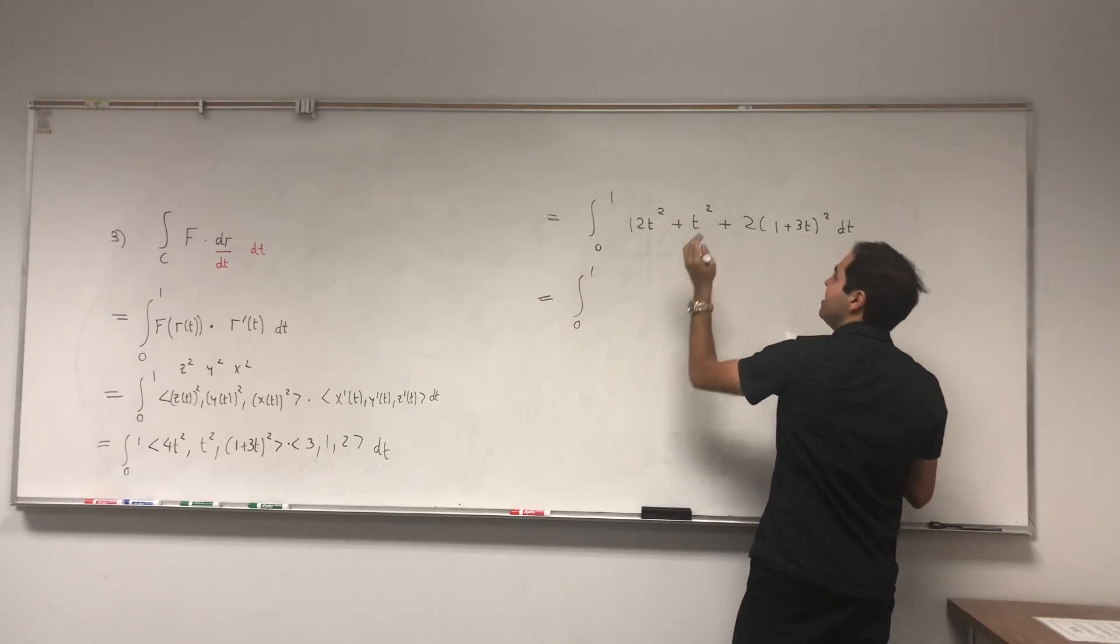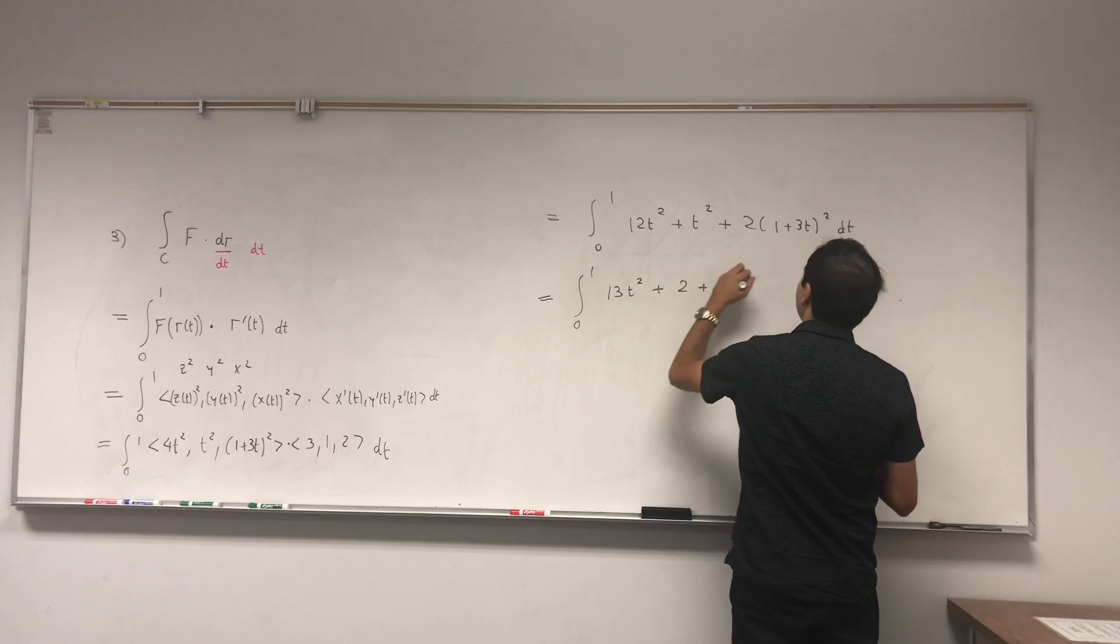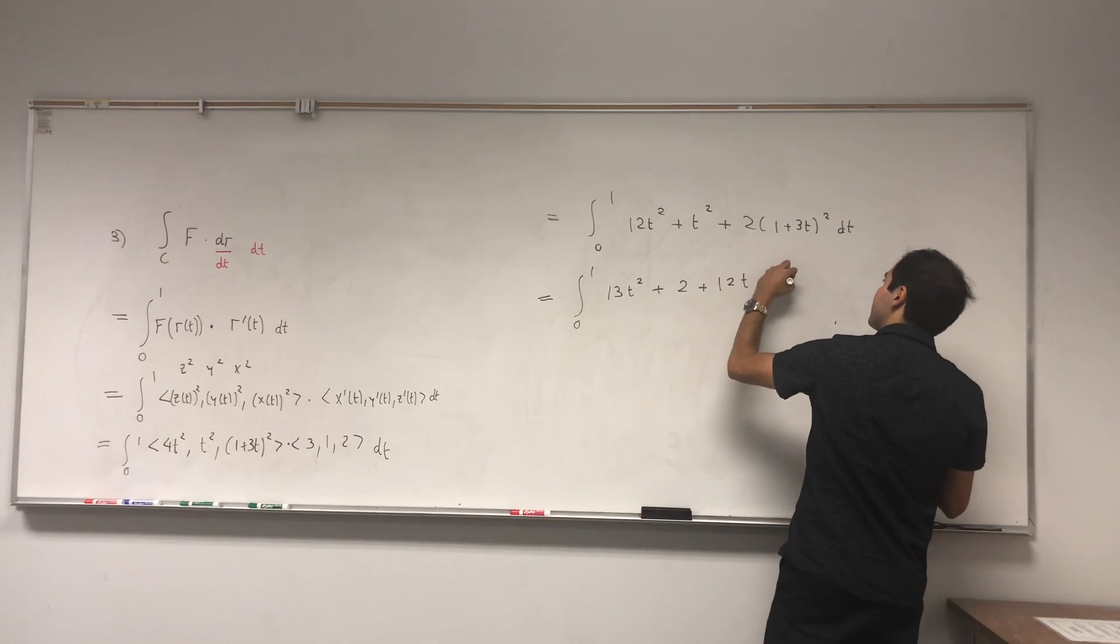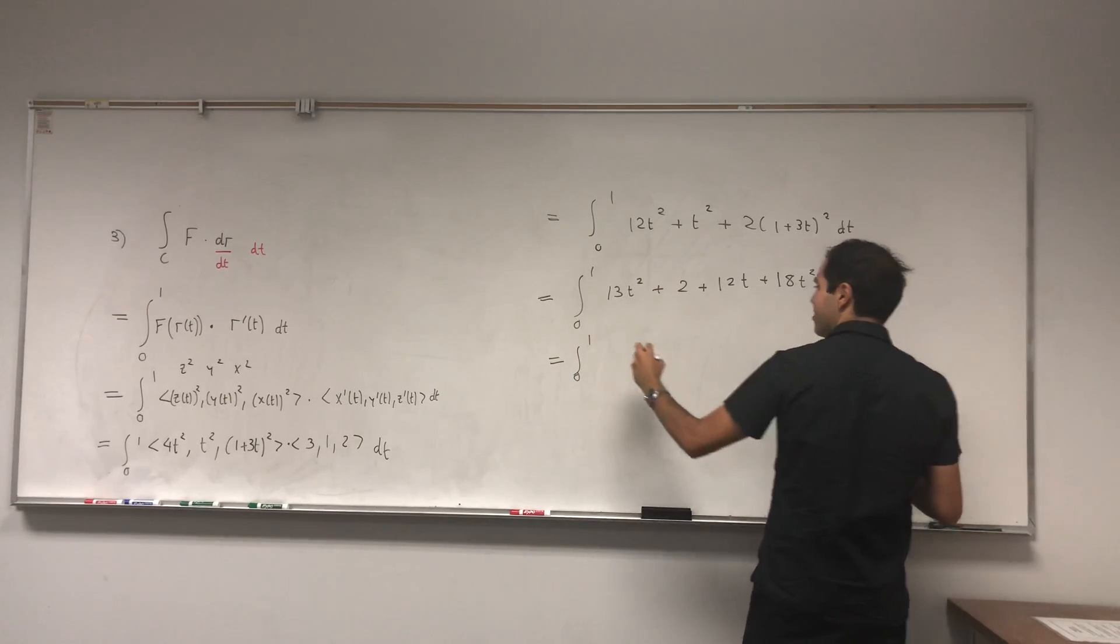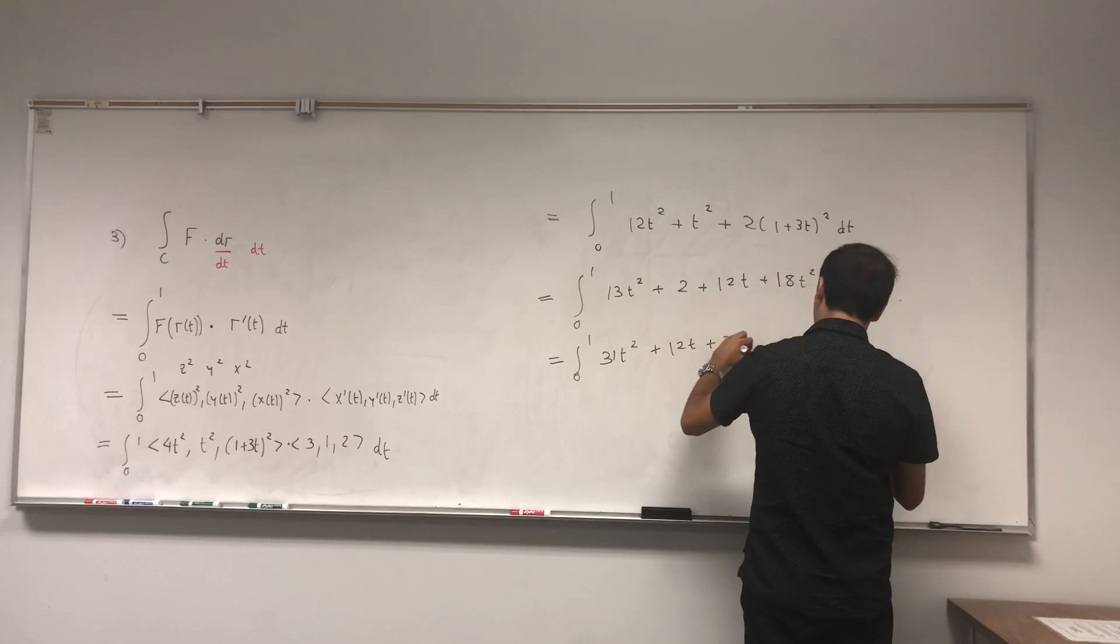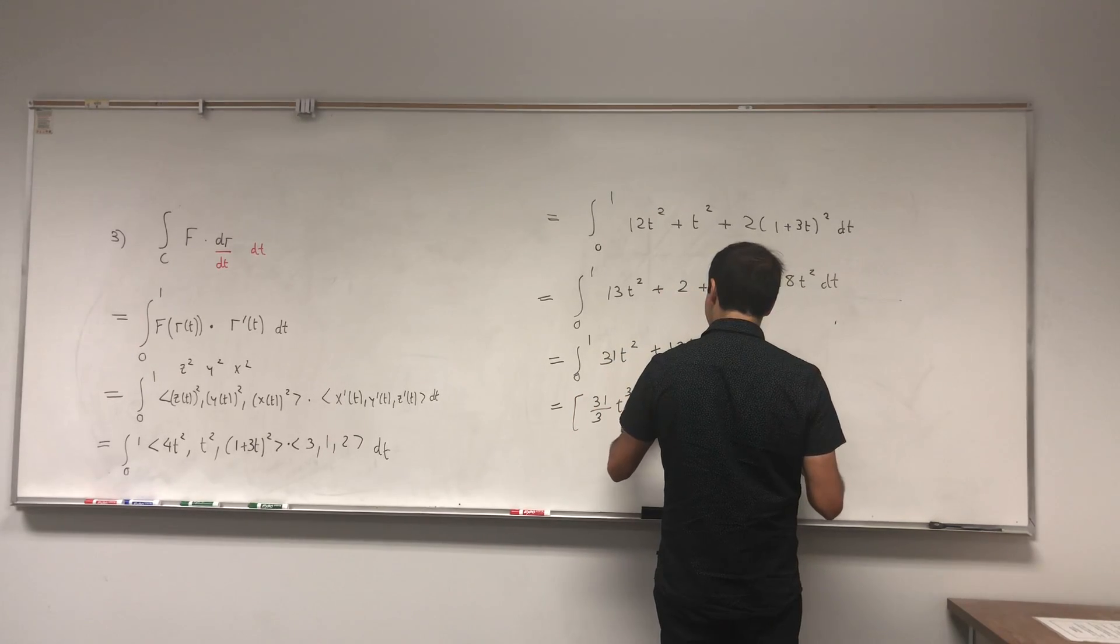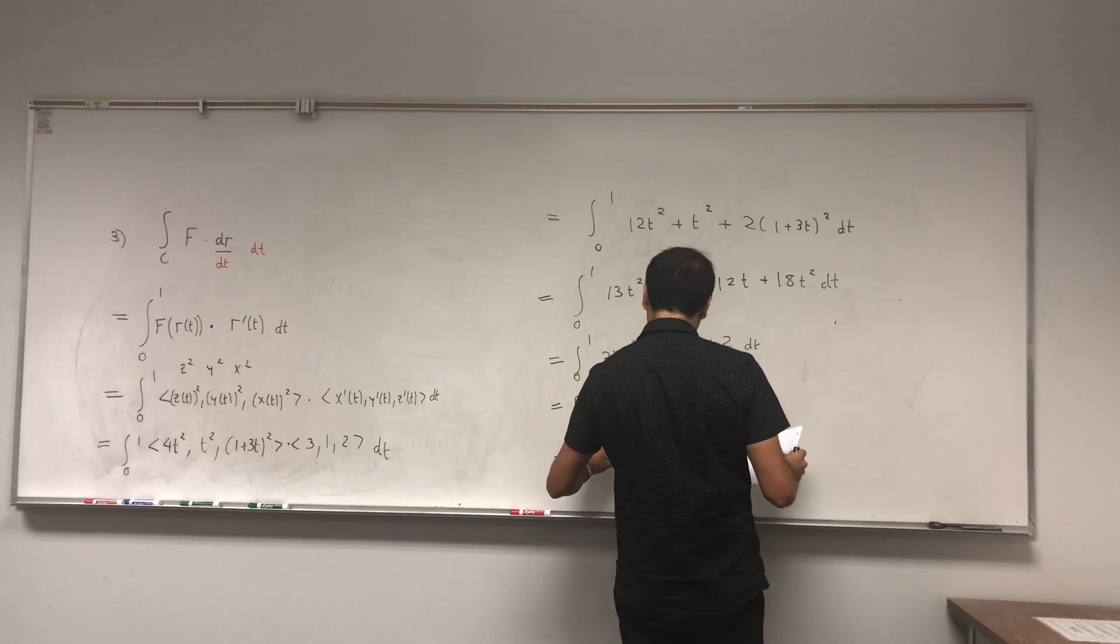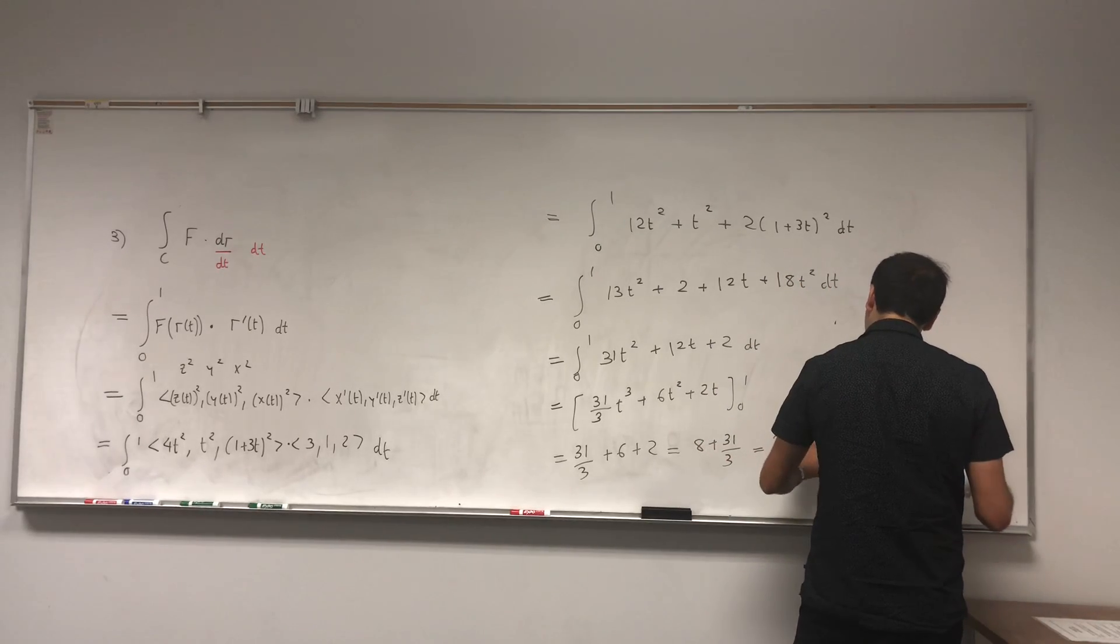You calculate that. So 12t squared plus t squared, it's 13t squared. You fold that out, for example. So 2 plus 2 times 3, that's 6, times 2, it's 12t. And then 3 squared, that's 9, times 2, 18t squared, dt. And let's see, 13 plus 18, that's 31. 31t squared plus 12t plus 2 dt. And you get 31 over 3 t cubed, plus 6t squared, plus 2t, from 0 to 1. And that's 31/3 plus 6 plus 2, and that's 8, plus 31/3, and that's 24 plus 31 over 3. And that's 55 over 3.